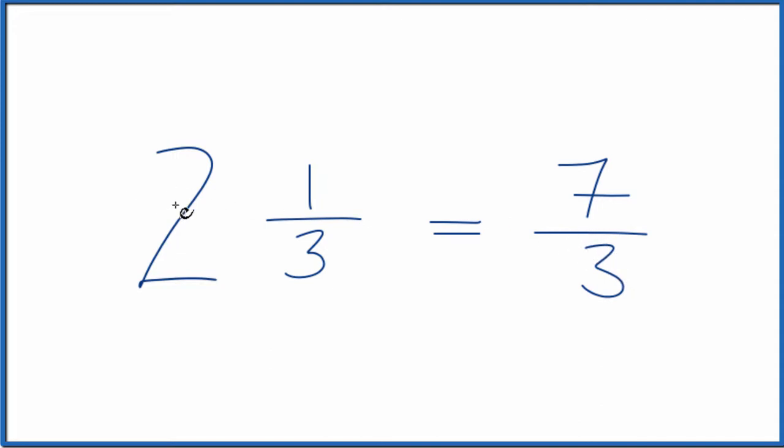One more time. Take 2 times 3. That gives us 6 plus 1. That's our 7, and we just bring that 3 across.